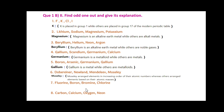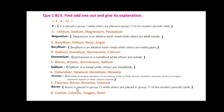Then: Fluorine, Boron, Bromine and Chlorine. Friends, here Boron is the odd man out. Since Boron is placed in Group 13, while others are placed in Group 17 of the modern periodic table.